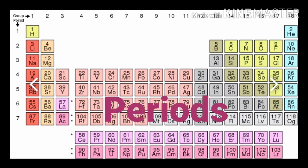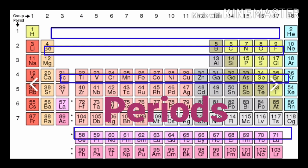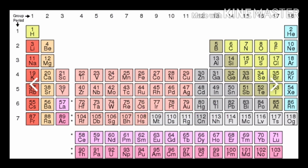Now what are periods? Periods means the horizontal rows are called periods. It starts from left to right. In the modern periodic table there are four different block elements: S-block elements, P-block elements, D-block elements, and F-block elements.